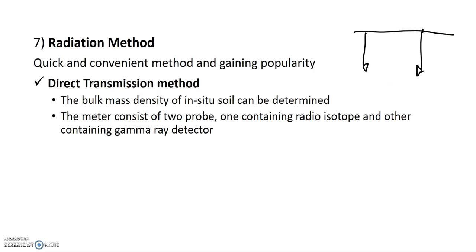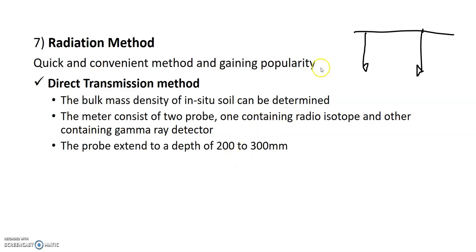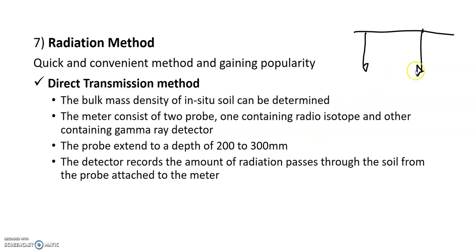Next is the Radiation Method. This method uses two probes: one is a radio isotope source and the other is a detector. The radio isotope emits gamma rays. The probe spacing is about 200–300 mm. The gamma rays are detected by the detector. If the soil is dense, the gamma rays reaching the detector will decrease because denser soil absorbs more gamma rays.